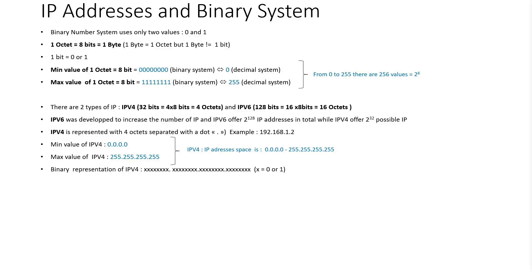We have two types of IP addresses: IPv4 and IPv6. IPv4 contains 32 bits. This value is equal to 4 multiplied by 8 bits. We already know that 8 bits is equal to 1 octet, so this value is equal to 4 octets. And an IPv6 contains 128 bits. This value is equal to 16 octets. IPv6 was developed to increase the number of IPs, and with IPv6 we can have up to 2 to the power of 128 IP addresses.